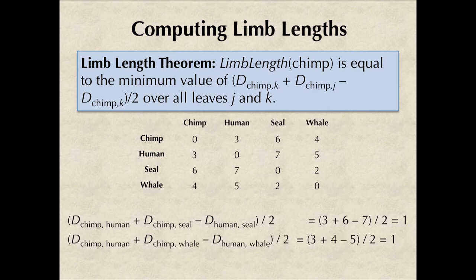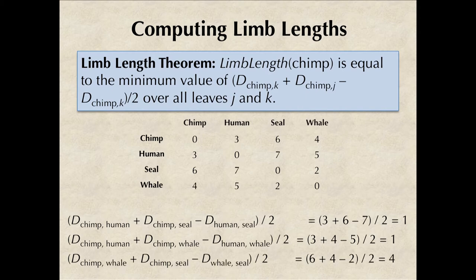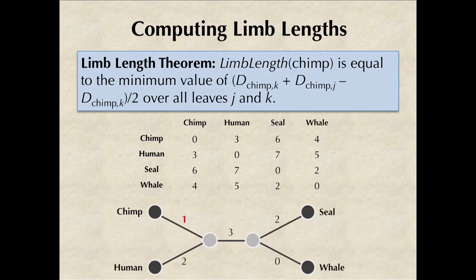We could take these leaves to be human and whale, in which case we get one again when we plug in the matrix values. Or we could take these leaves to be whale and seal, in which case we get four when we plug in the matrix values. So the minimum of these three values is one, and that confirms what we already knew was the limb length of chimp.